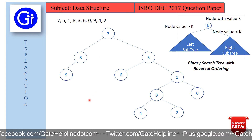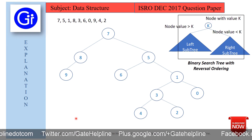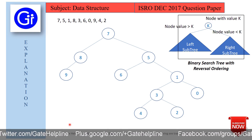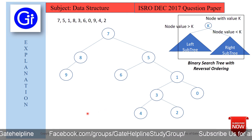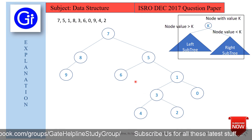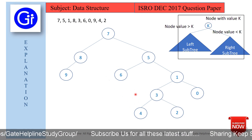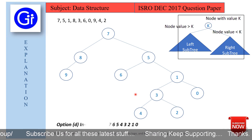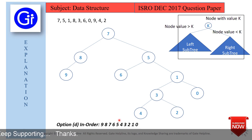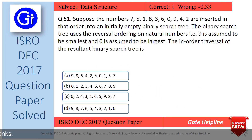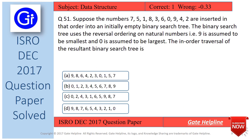After verifying the BST, we need to get the in-order traversal. We assume you know how to compute in-order traversal — if not, please comment below and we will upload a video on that soon. The in-order traversal gives us the answer: option D, which is 9, 8, 7, 6, 5, 4, 3, 2, 1, 0. So the answer to this question is option D.